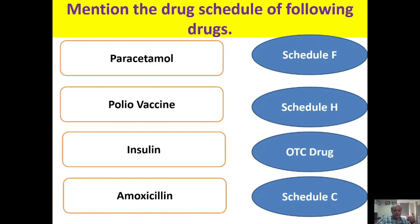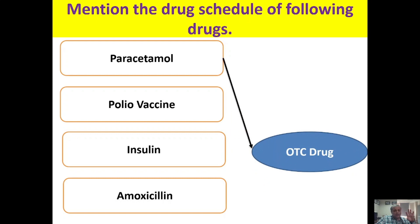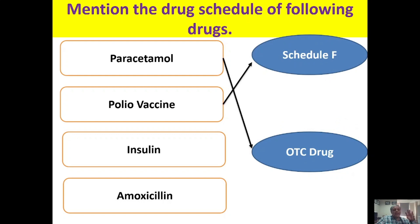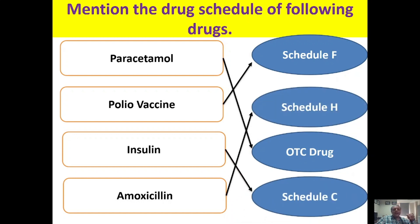Identify the schedule of the drug. Paracetamol is an OTC drug available without prescription. Polio vaccine is included in Schedule F. Insulin is a biological product included in Schedule C. Amoxicillin requires a prescription from a registered medical practitioner — it falls under Schedule H, or Schedule H1, since antimicrobials are under H1 due to antimicrobial resistance concerns. Schedule H is the correct option here.